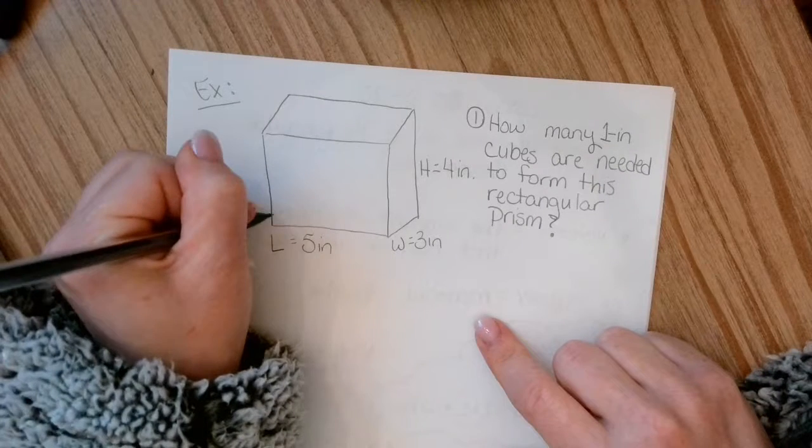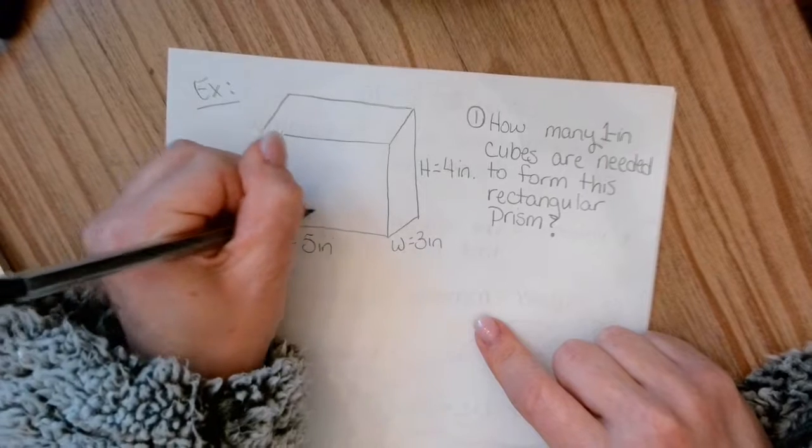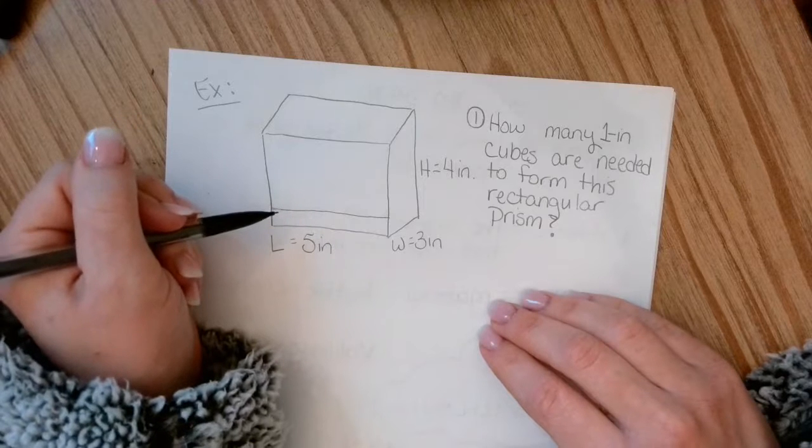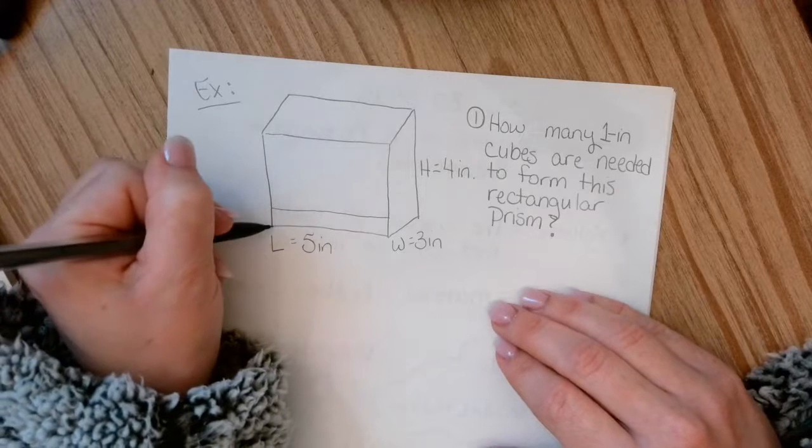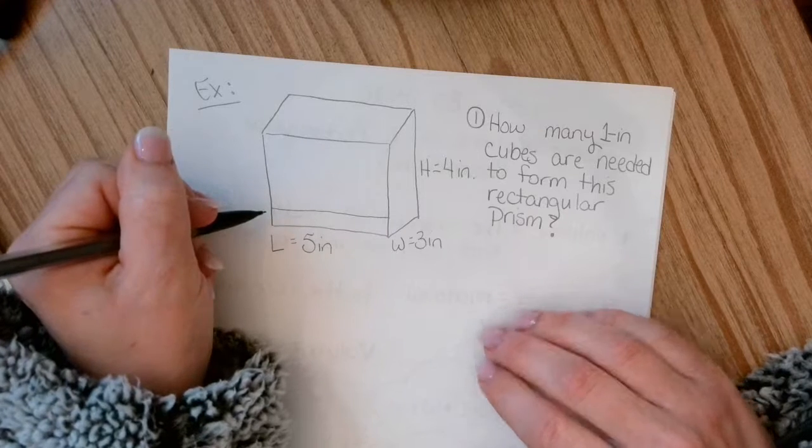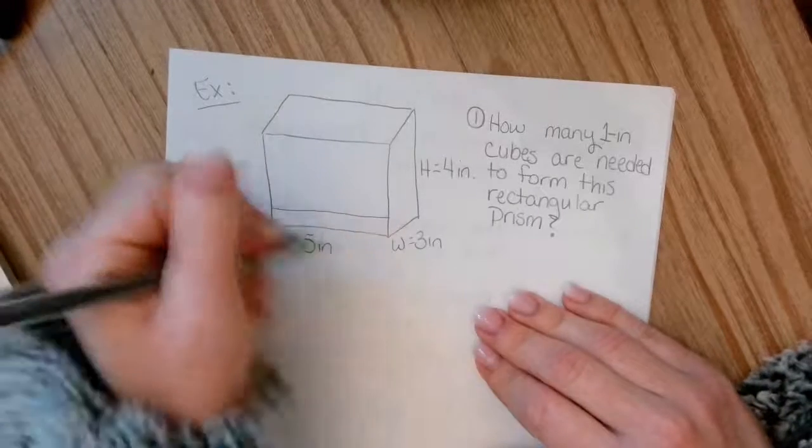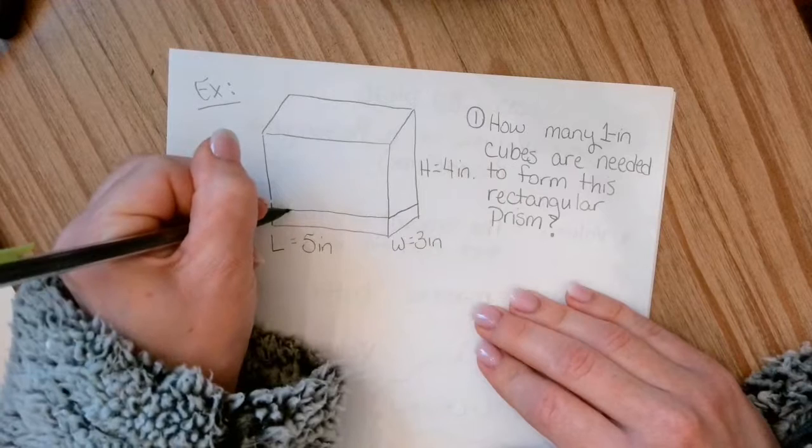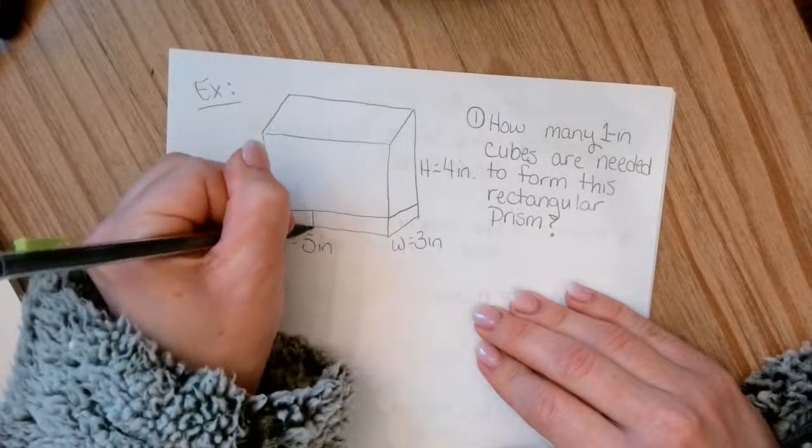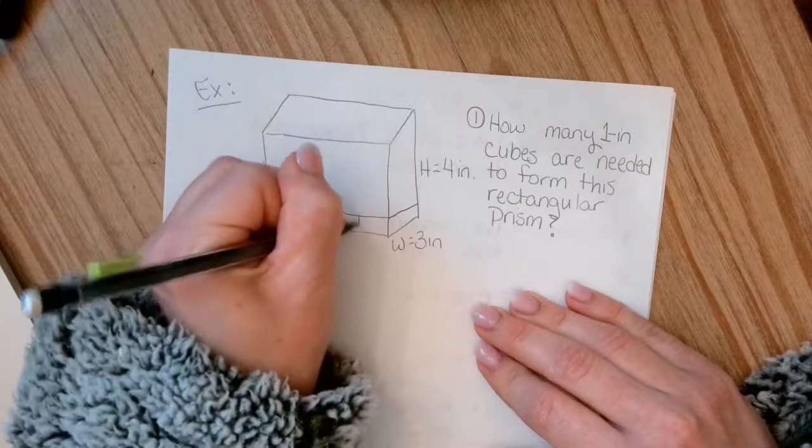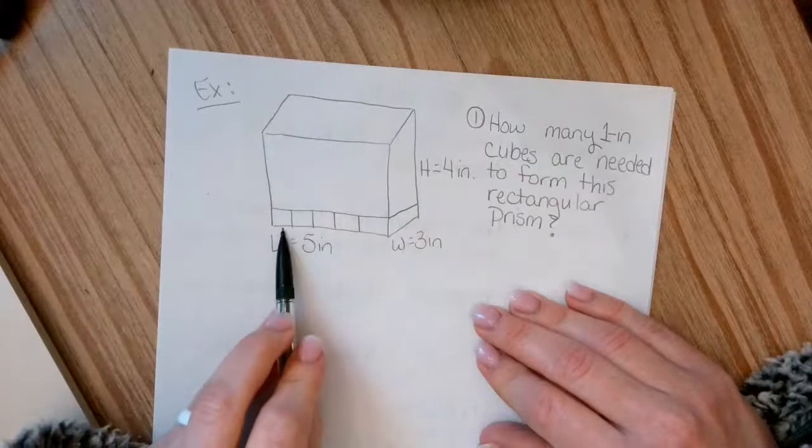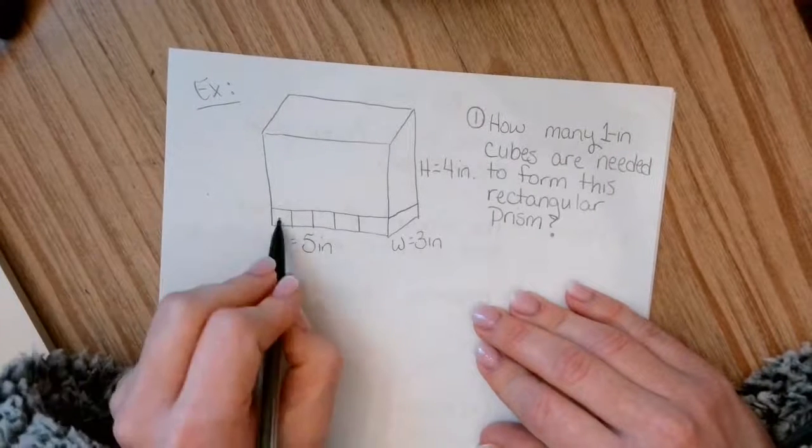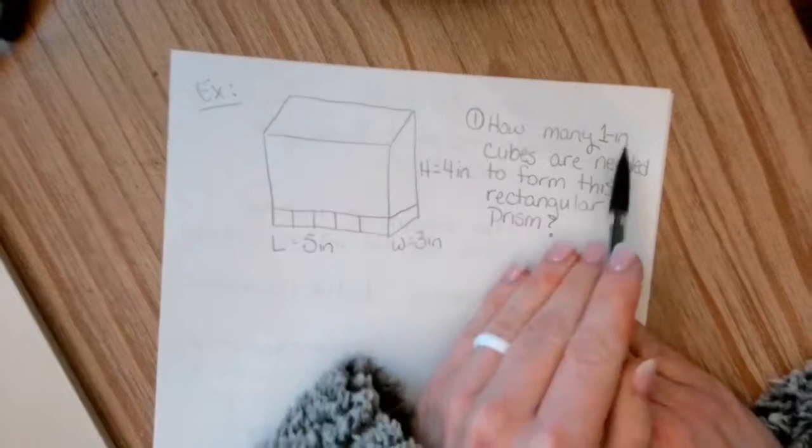So what they mean by how many one inch cubes are needed to form this prism is I want you to sort of visualize that there is going to be cubes that are stacked to make a bigger cube. And I'll have to borrow my son's blocks, but I'll show you a picture of that here in just a second. So picture this just for now. If it's five inches on the length, then that means that there's going to be five cubes on the bottom. So one, two, three, four, five.